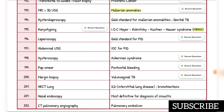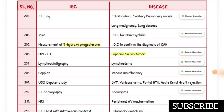Investigation of choice for vulvovaginal TB is margin biopsy. Interstitial lung disease and bronchiectasis: investigation of choice is HRCT lung. Most definitive for diagnosis of sinusitis is nasal endoscopy. Investigation of choice for pulmonary embolism is CT pulmonary angiography — this is a recent question.